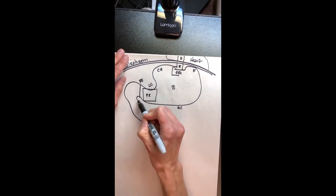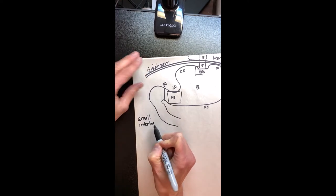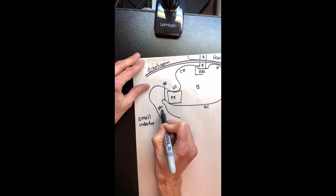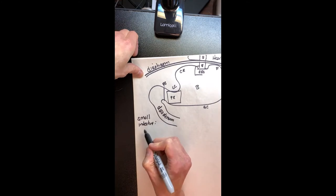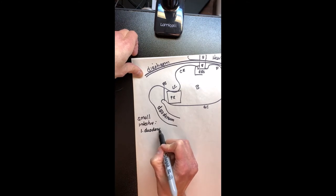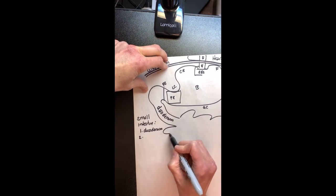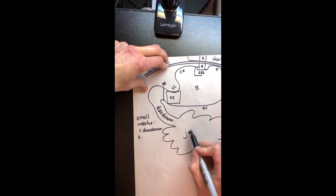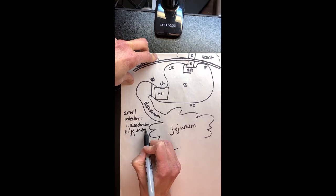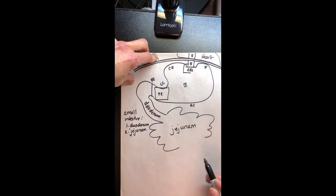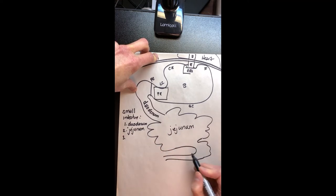Now let's move into the small intestine. The first part is the duodenum — you may have heard it pronounced 'duodenum.' The second part, which I'm not going to draw in depth, is called the jejunum. The third part that bumps into the large intestine is going to be the ileum.